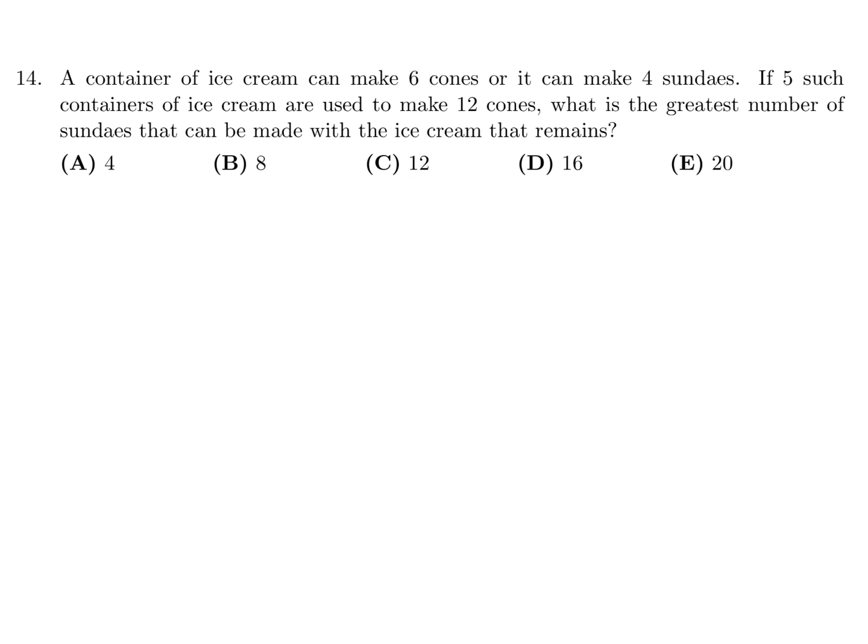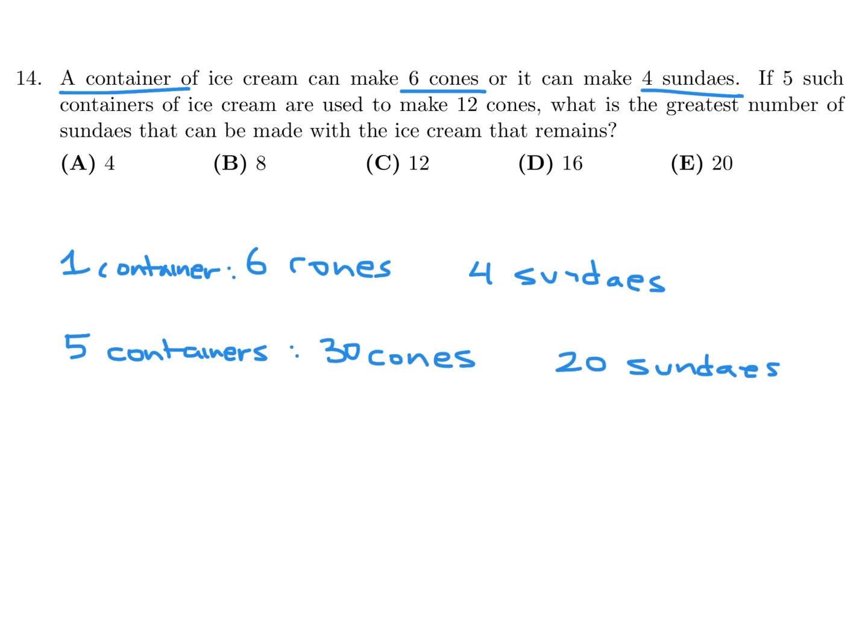A container of ice cream can make 6 cones or it can make 4 sundaes. If 5 such containers of ice cream are used to make 12 cones, what is the greatest number of sundaes that can be made with ice cream that remains? Okay, so we have 6 cones or 4 sundaes, right? So if I were to, let's see here, I've got to extrapolate that, right? Because I've got this time 5 containers, because this is a container. So 1 container is what produces this. So this time I've got 5 containers, so therefore I've got to multiply that by 5. So instead of 6 cones, it would be 5 times 6, which is 30 cones. And then 5 times 4, 20 sundaes.